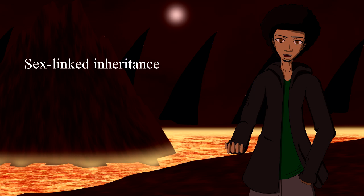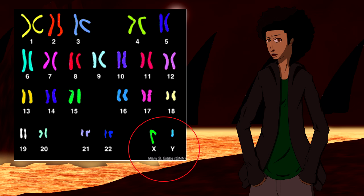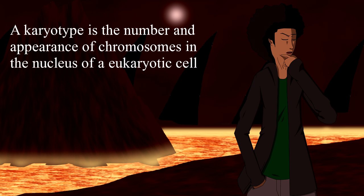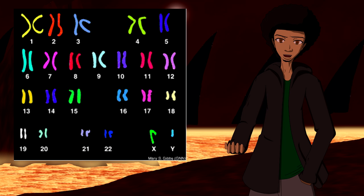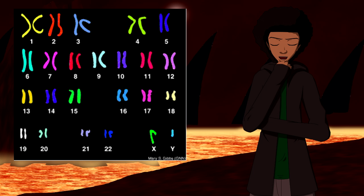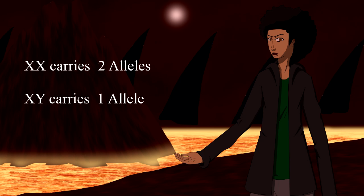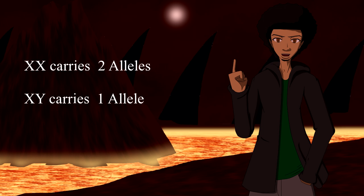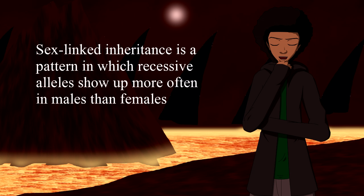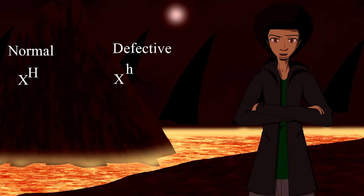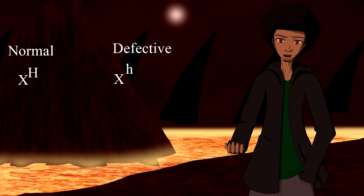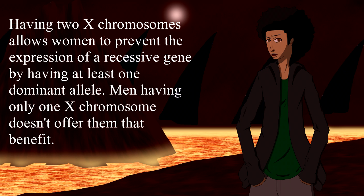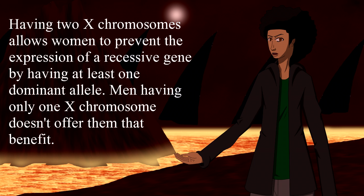The last pattern of inheritance is sex-linked inheritance. In the human karyotype, the X and Y sex chromosomes are not truly homologous to each other. A karyotype is the number and appearance of chromosomes in the nucleus of a eukaryotic cell — we humans are eukaryotes. Since the X chromosome is considerably longer than the Y, the X chromosome carries certain genes not represented on the Y chromosome. Therefore, the XX female genotype can carry two alleles for a trait, but the XY male genotype can only carry one. Sex-linked inheritance is a pattern in which recessive alleles show up more often in males than females. If a woman inherits a normal gene from one parent and a defective gene from the other, she is considered a carrier. Women usually don't express the recessive gene, but she can pass it on to her offspring. Basically, these traits are carried on the X chromosome — women have two and men only have one.